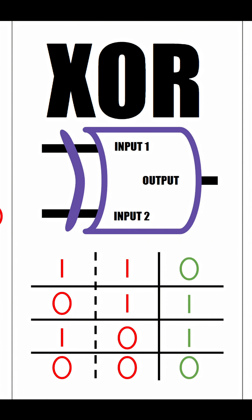So let's do some practice. 1 0 — what do we get? We get a 1 because exactly one input is on, namely input 1. But what if we switched that 0 to a 1? Well, the output would be 0 because both of the inputs are on.